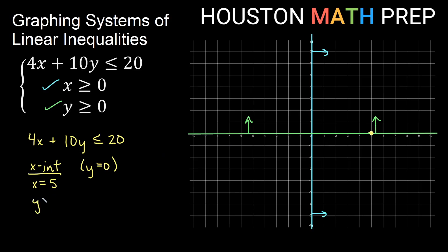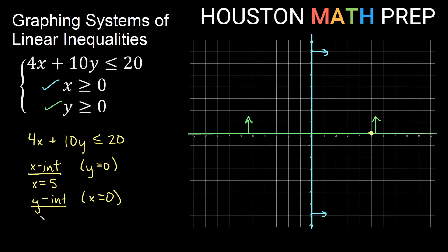For the y-intercept, set x equal to 0. That zeros out the x term and we get 10y equals 20. Dividing by 10 on both sides gives us y equals 2. So we have a y-intercept of 2. Now we have two points and can graph our line.